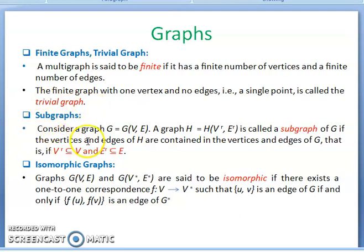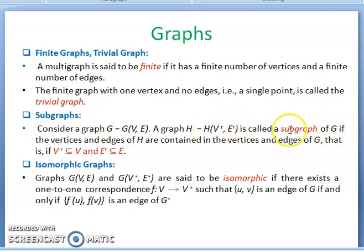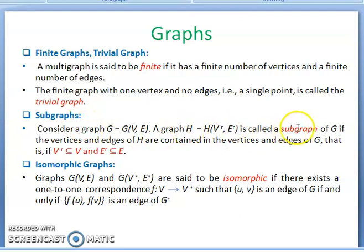A subgraph is part of the multigraph. Consider a graph G consisting of capital V and capital E — the number of vertices and number of edges. A graph H with V' and E' is called a subgraph of G if the vertices and edges of H are contained in the vertices and edges of G, that is V' is a subset of V and E' is a subset of E. Then graph H is the subgraph of G.